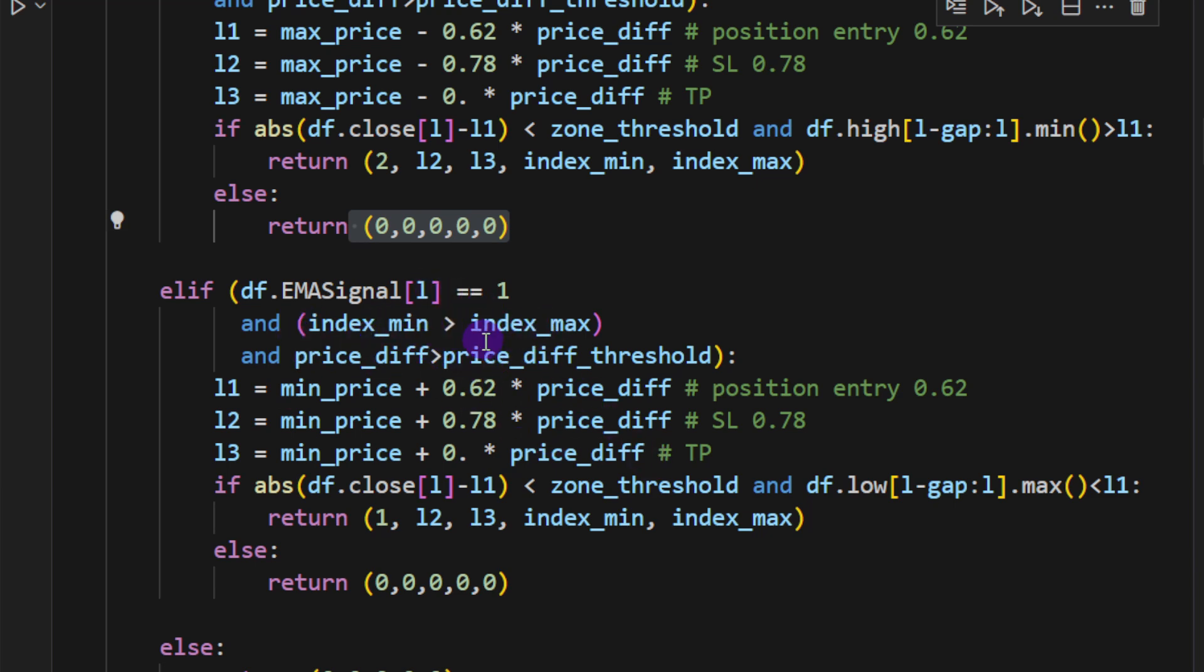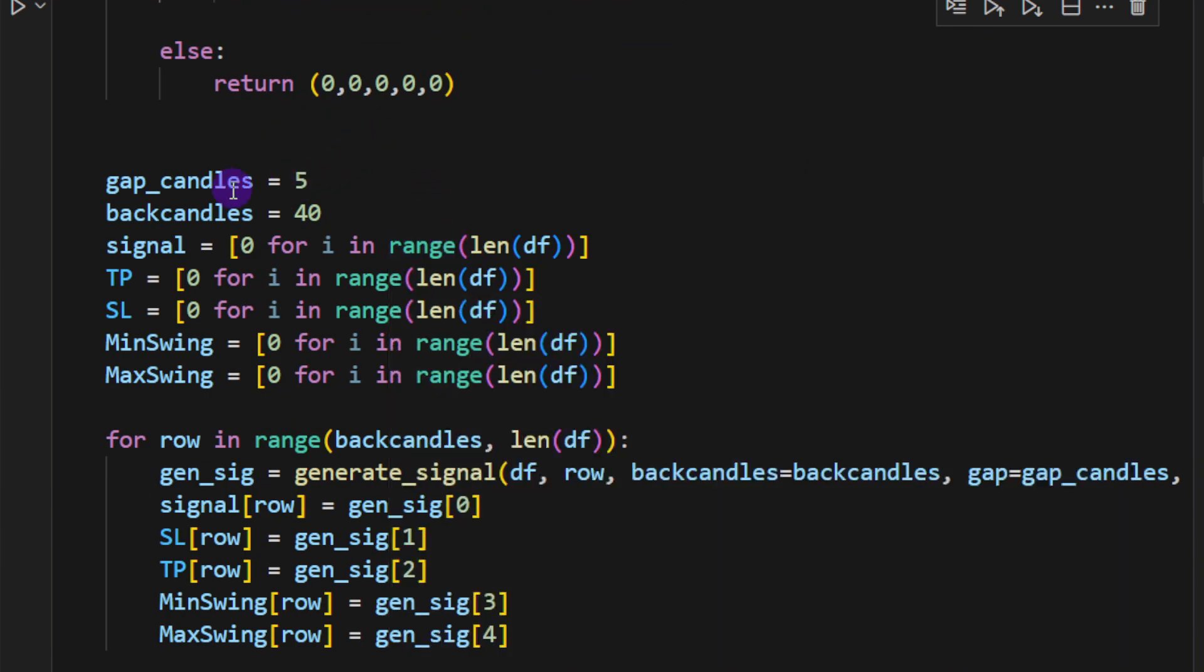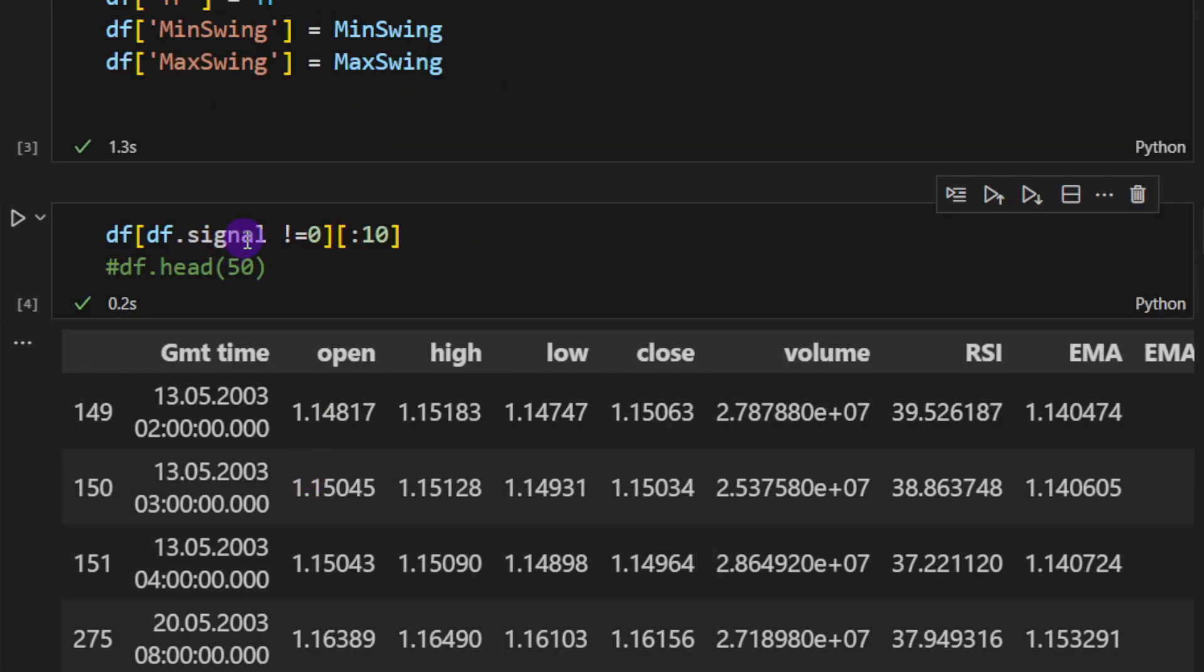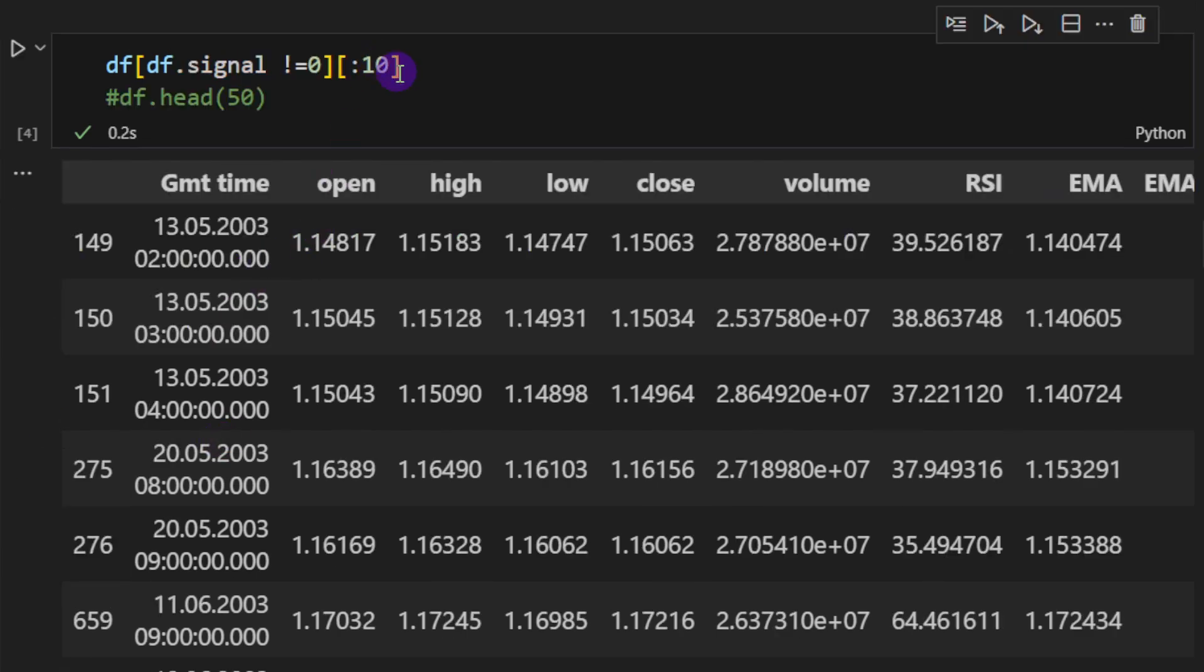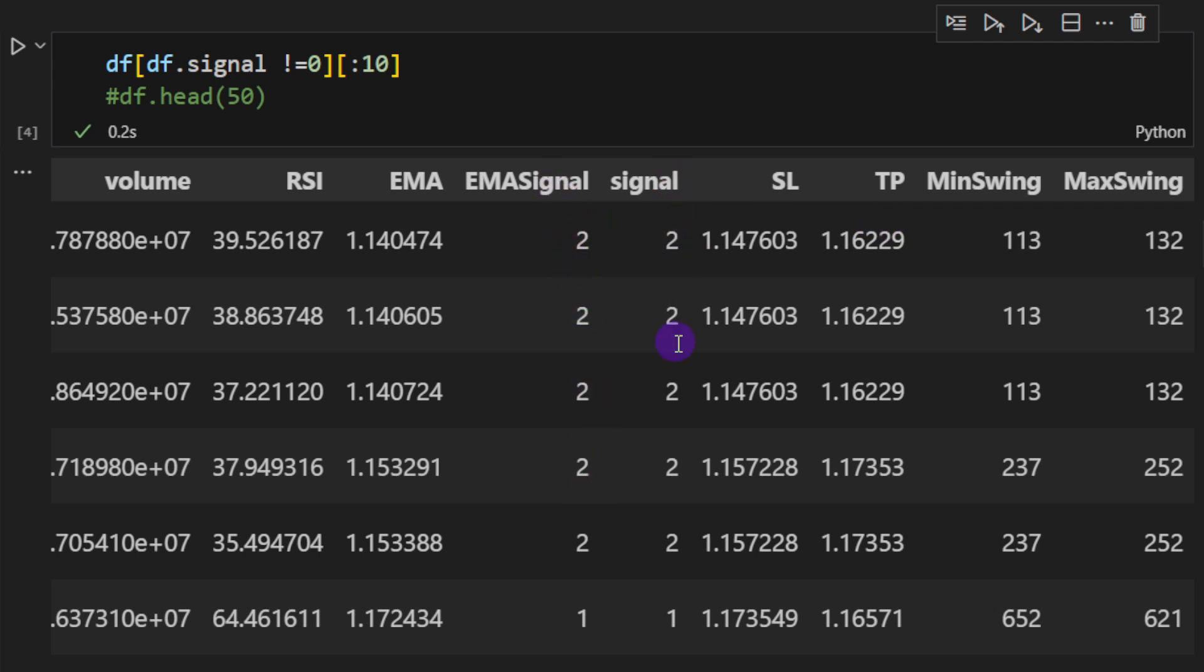If conditions are not met, we return zero. For the downtrend, we apply the same approach only with symmetrical conditions. For this test, I'm using 5 gap candles and 40 back candles on the hourly timeframe, and I'm creating the different lists using the generate signal function. We can now check the signals generated in the dataframe. I'm printing a small slice of the first 10 signals where the signal is different than zero.